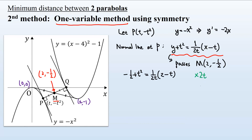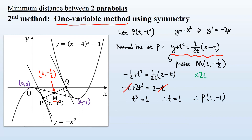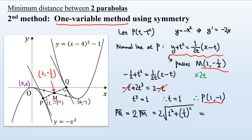Substituting M into the normal line equation: minus 1/2 plus t squared equals (1 over 2t)(2 minus t). Multiplying both sides by 2t: minus t plus 2t cubed equals 2 minus t. Therefore t cubed equals 1, so t equals 1. The coordinates of P are (1, minus 1). The minimum distance PQ equals 2 times the distance PM, which is 2 times the square root of 1 squared plus (1/2) squared, giving the square root of 5 — the same answer as the first method.